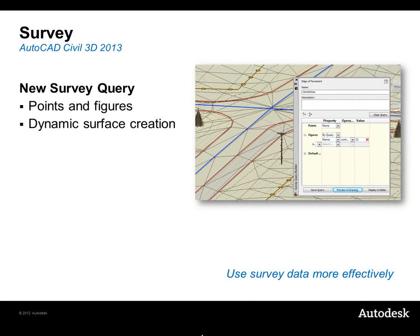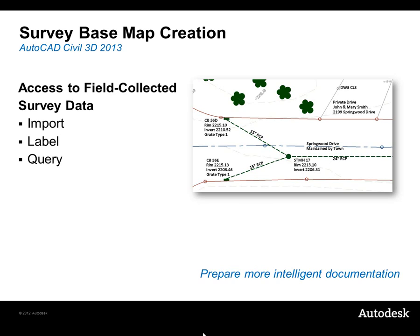When it comes to survey, the first area we'll explore is the new survey querying functionality. It allows us to go into a survey database that may have thousands of points and lines — called survey figures in Civil 3D — and query them. So instead of one large database, we can find all curbs, all lot corner points, or similar groupings. It allows us to use our survey data more effectively and efficiently. Additionally, we can now label or apply annotation to survey figures consistent with what we'd do with parcels, and we can leverage querying for a more dynamic relationship between survey data and surfaces.